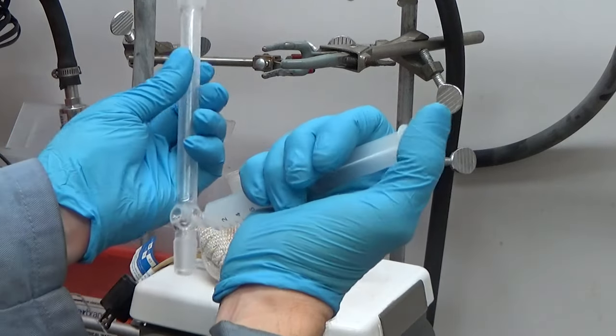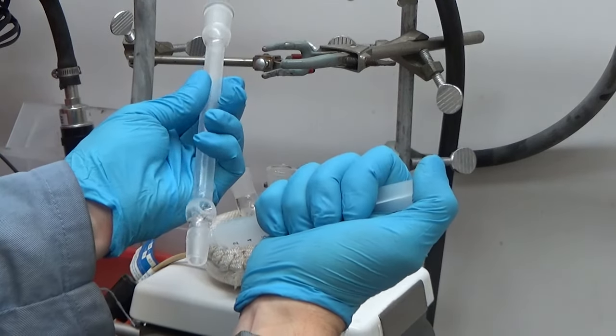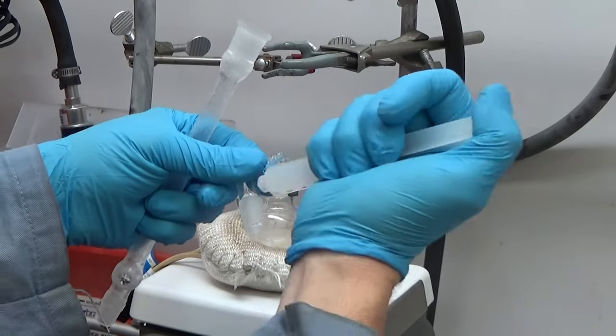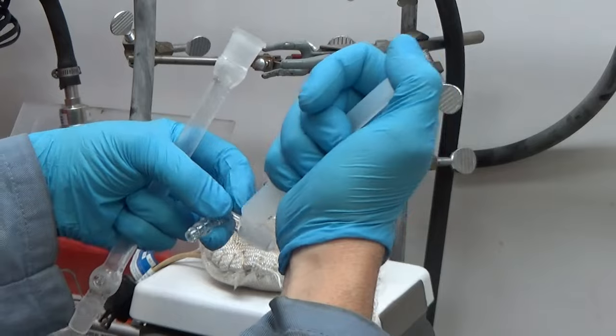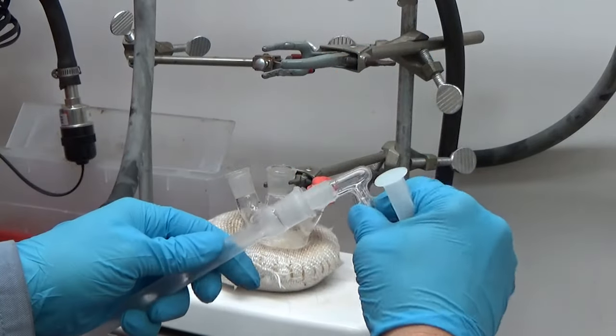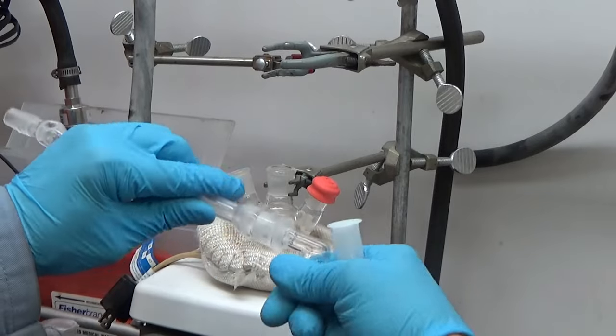So now we're going to add the condenser. I always add the grease just near the very top. And that way, when I put the condenser on, there's minimal chance the grease will get in the solvent. I don't think it really matters if it does or not. You can be a little bit more liberal with the hose adapter.